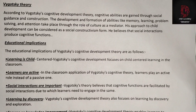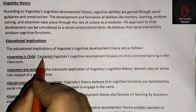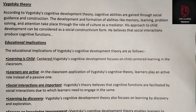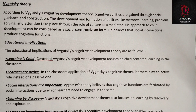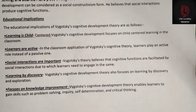First, learning is child-centered: Vygotsky's cognitive development focuses on child-centered learning in the classroom. Second, learners are active: applications of Vygotsky's cognitive theory emphasize that learners play an active role instead of a passive one. Third, social interactions are important: Vygotsky's theories believe that cognitive functions are facilitated by social interactions, so learners need to engage in them. Fourth, learning by discovery: Vygotsky's theory focuses on learning by discovery and exploration. Fifth, focus on knowledge improvement: the theory enables learners to gain skills such as problem-solving, inquiry, self-determination, and critical thinking.